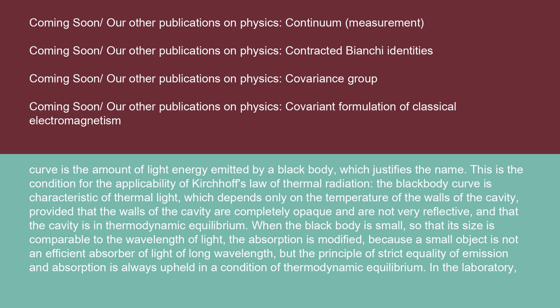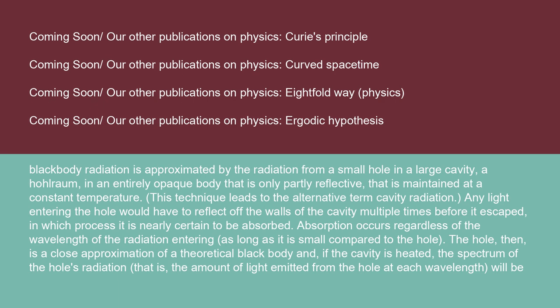But the principle of strict equality of emission and absorption is always upheld in thermodynamic equilibrium. In the laboratory, black body radiation is approximated by the radiation from a small hole in a large cavity — a hole realm — in an entirely opaque body that is only partly reflective, maintained at a constant temperature. This technique leads to the alternative term cavity radiation. Any light entering the hole would have to reflect off the walls multiple times before it escaped, in which process it is nearly certain to be absorbed. Absorption occurs regardless of the wavelength, as long as it is small compared to the hole.